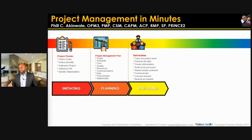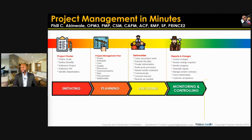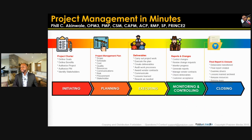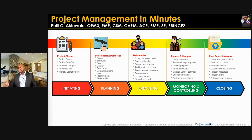You audit the work process and more. Then monitoring and controlling, where you are reporting on the project and making changes. And finally closing, where you close out either a phase or the entire project: the deliverable is transitioned, the final report is created, lessons learned are archived, and more.